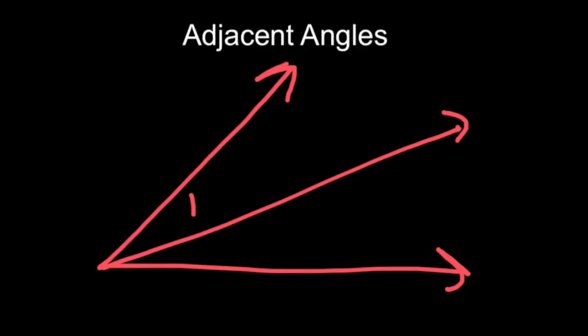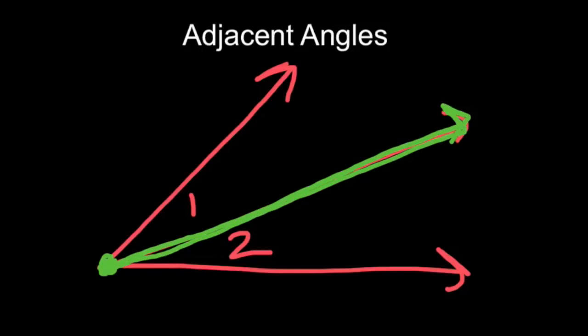Angle 1 is adjacent to angle 2. They share a vertex and they share a side. So if they're right next to each other and they share a vertex and a side, they are called adjacent angles.